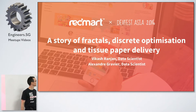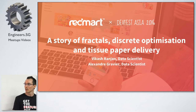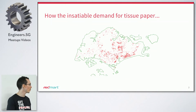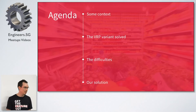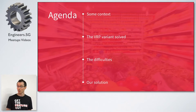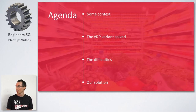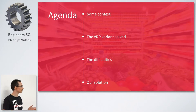Everyone, can you hear me? Great. So we are going to talk — Vikash and myself, my name is Alex — we are data scientists. We are going to talk about how Redmart can fulfill the demand for tissue paper, water, and all the thousands of items that we are selling using many cool stuff, including fractal curves. Many of you probably have not worked in the past in warehouses, transport, or logistics. I want to first give you an idea of what's happening on the ground — what problems you are actually trying to solve — and then frame it in computer science terms.